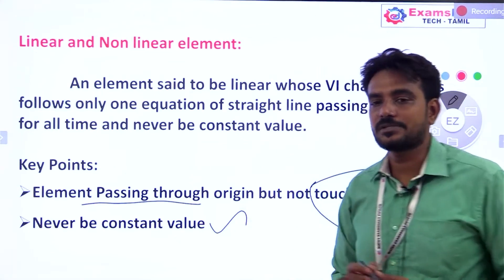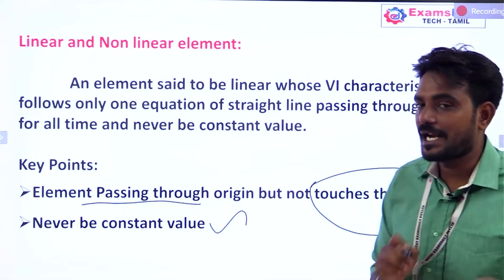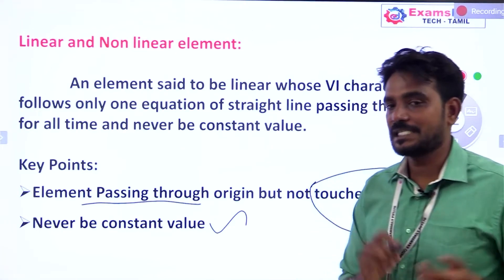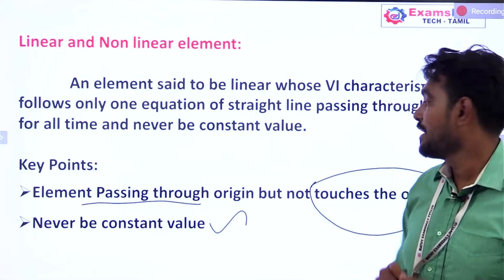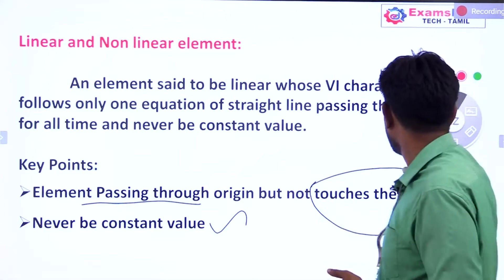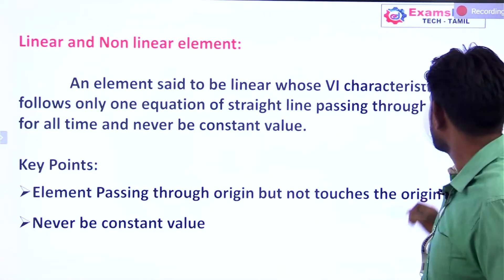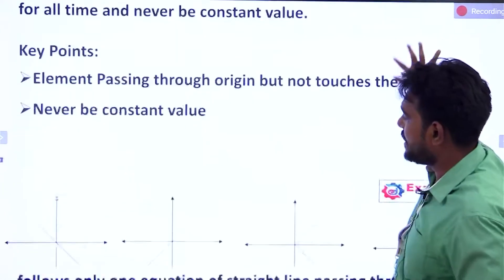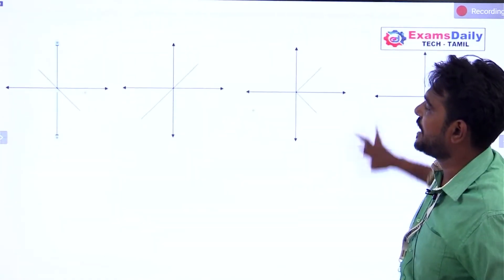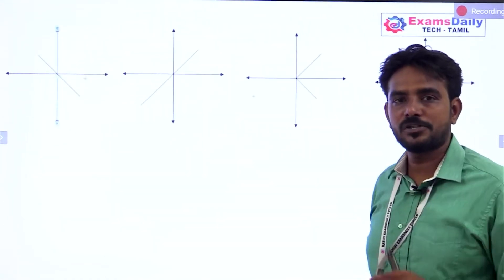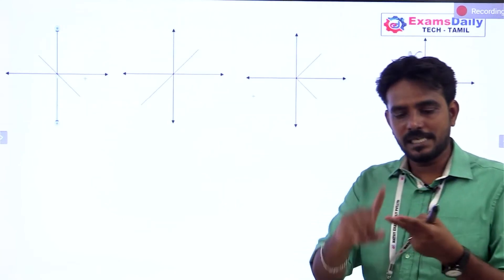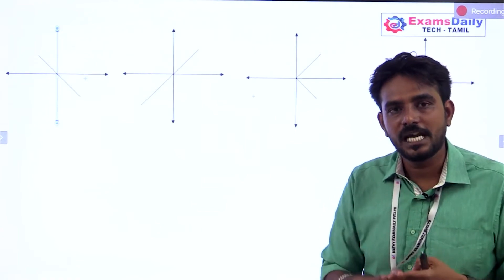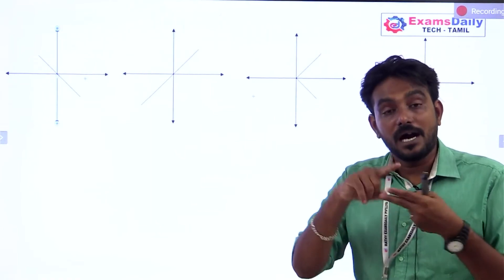A linear element must satisfy the superposition and homogeneity principles. This is a linear element; otherwise the element should be non-linear. So what we need to look at is a graph — one element must pass through the origin and never be constant.